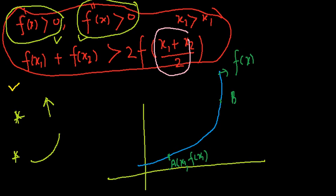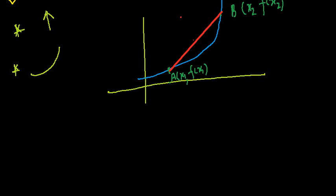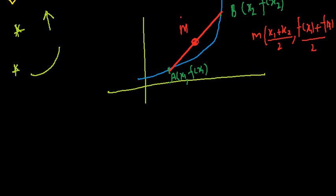Point b has x-coordinate x2 and y-coordinate f(x2). Because the function is concave upward, if I join the line segment AB, then every point on segment AB lies above the curve. The midpoint coordinates of AB are ((x1+x2)/2, (f(x1)+f(x2))/2).